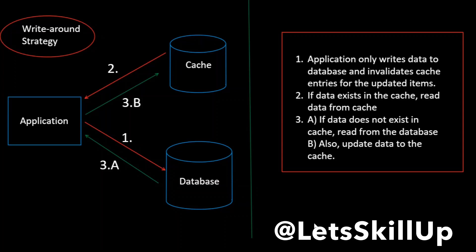The fifth strategy is the write-around strategy. In this arrangement data is always written to the database and the application reads from the cache. Only if there is a cache miss will the application read from the database and then update the cache for next time. Whenever we are writing to the database, some entries in the cache will become stale — the items in the cache related to the update will now be outdated. This method requires a way to invalidate those cache entries for subsequent reads, so it will invalidate those entries and the next read will result in a cache miss, loading from the database. A write-around caching strategy is best combined with either a cache-aside or a read-through strategy for maximum benefit.